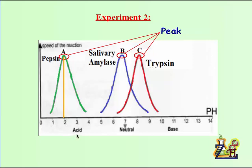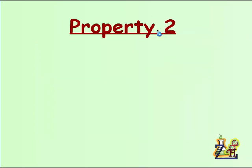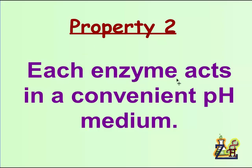While if we look at salivary amylase, we can see that its peak is at about 6.8 pH, which is a neutral medium. While trypsin peaks at pH 8, about 8, which is a basic medium. Here we can see that each enzyme can be active in a convenient pH medium. Here we can go to the second property, which says that each enzyme acts in a convenient pH medium.